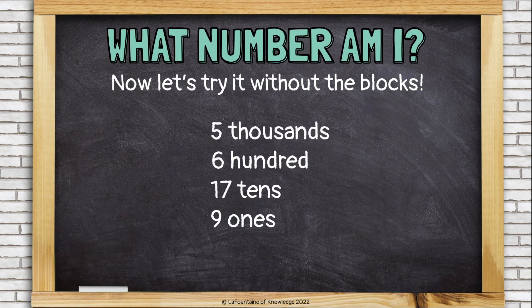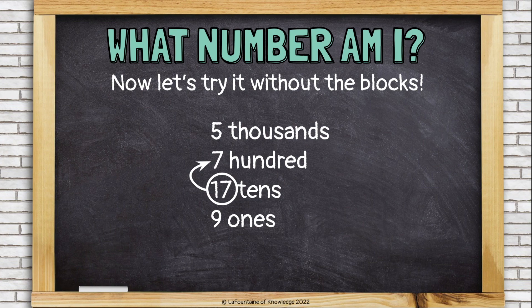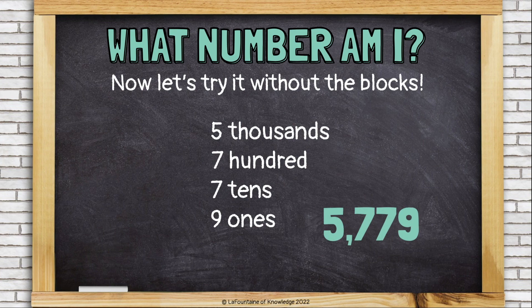Let's look at an example without the blocks. I have 5 thousands, 6 hundreds, 17 tens, and 9 ones. I can tell that the 17 tens need to be regrouped. Let's take out 10 of those tens and turn it into another hundred. So I had 6 hundreds — now I have another hundred. I have 7 hundreds and only 7 tens left. Now I can see the number 5,779.